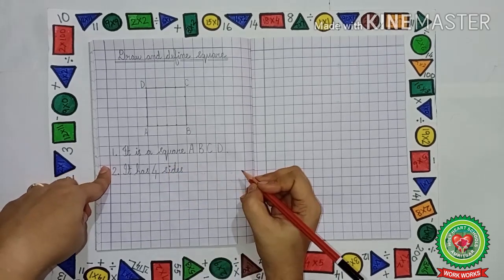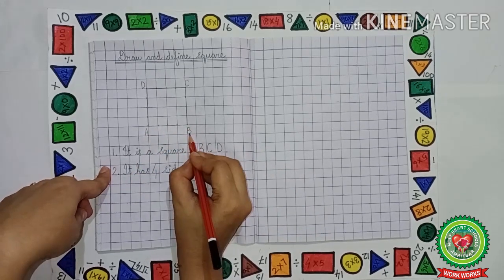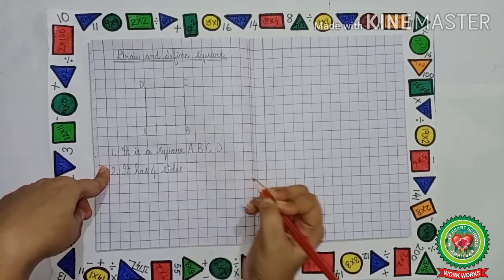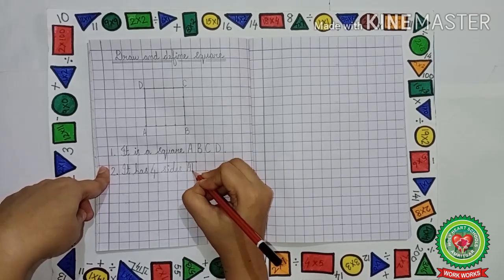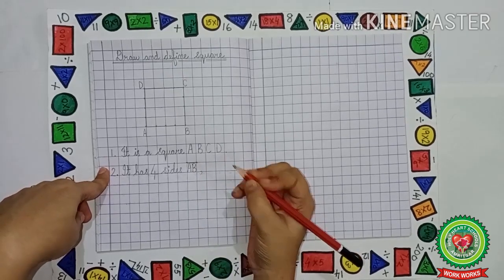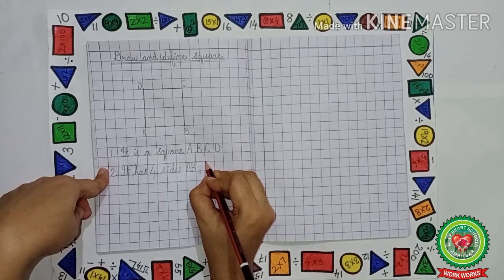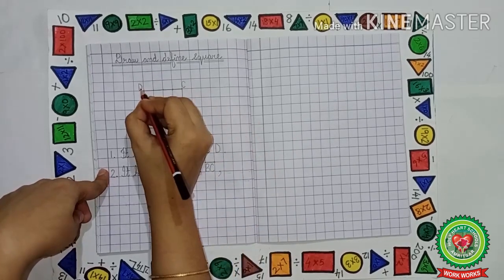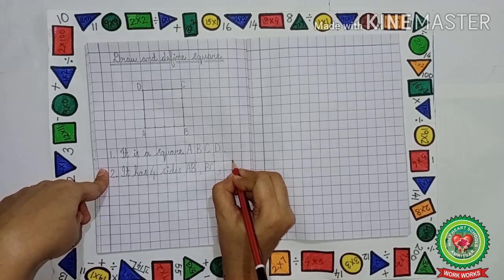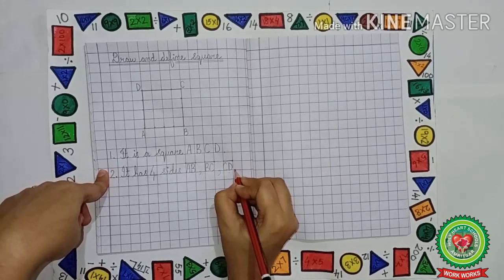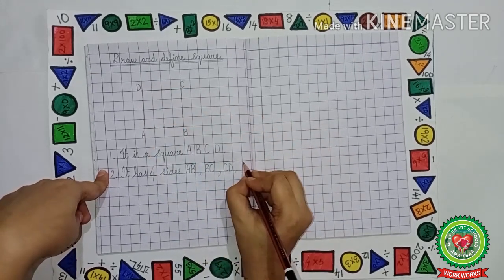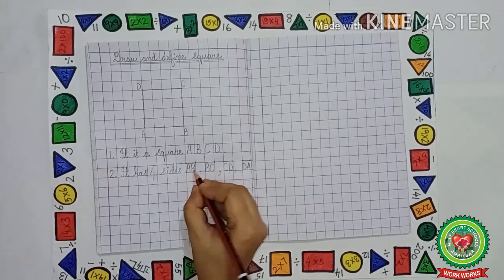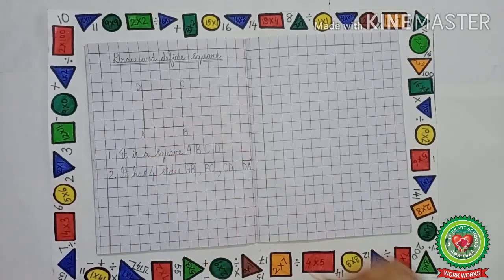Now, what are the names of the sides? The sides are AB, BC, CD and DA — these are the four sides of the square.